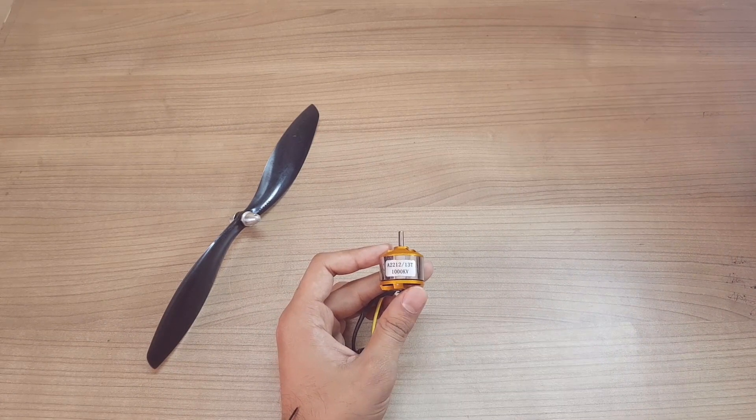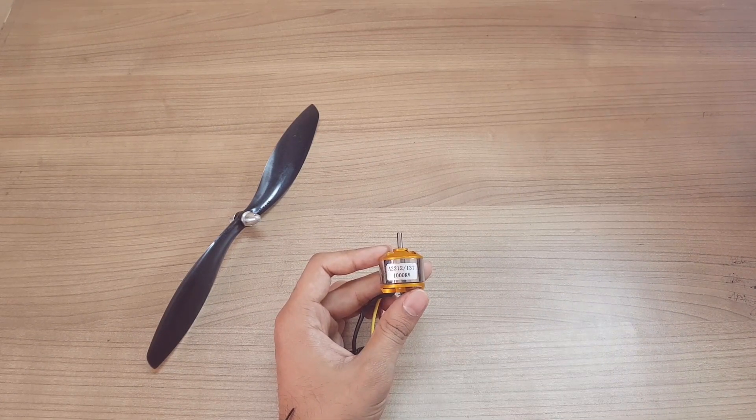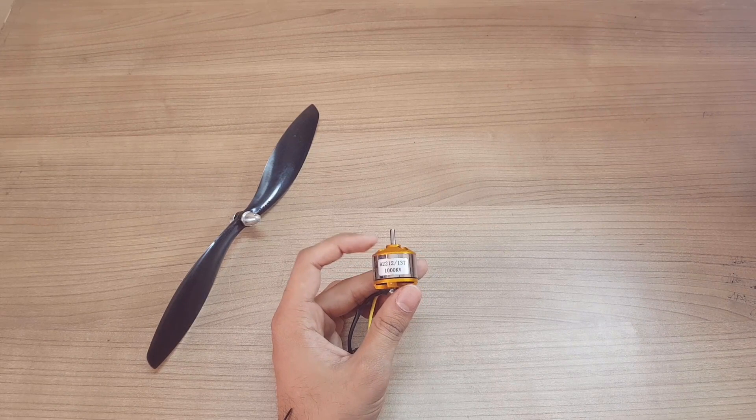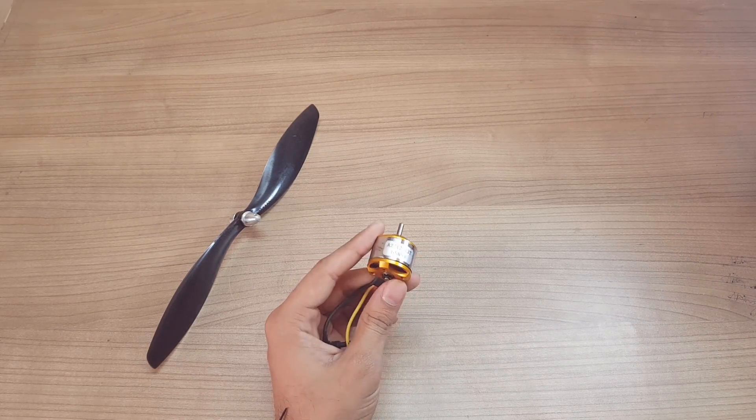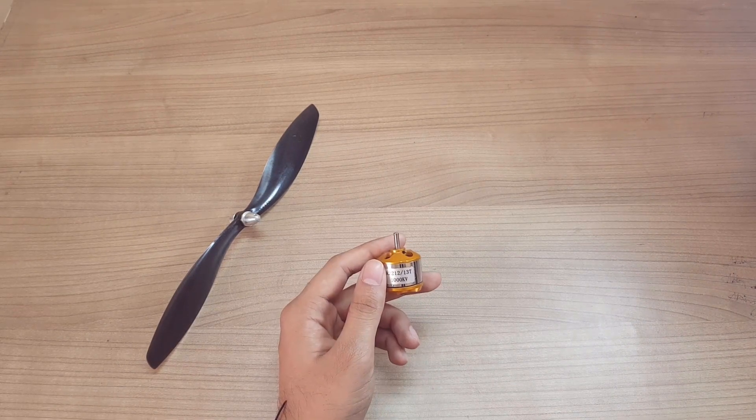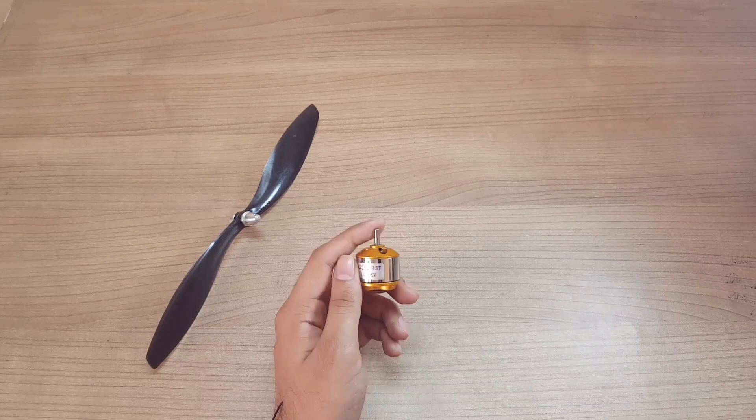At maximum throttle using a 12-volt battery, you can get 12,000 RPM from this motor. If you want, you can use higher motors. There are other specification motors ranging from 1200, 1400, 1600, 1800, 1500, 2000.